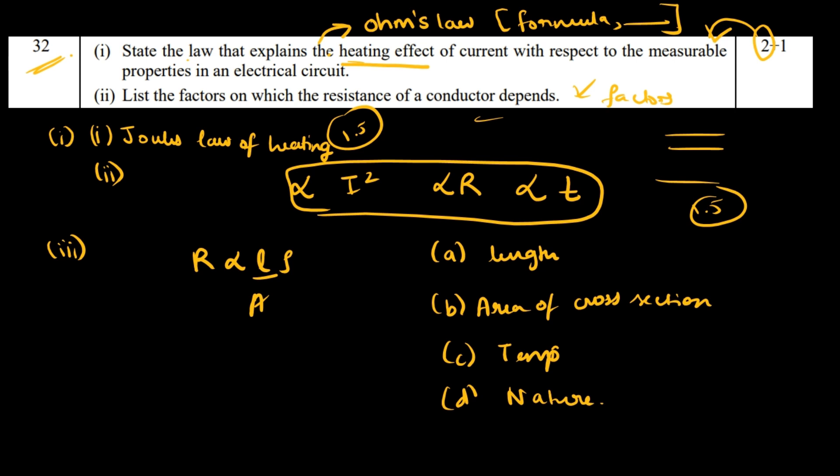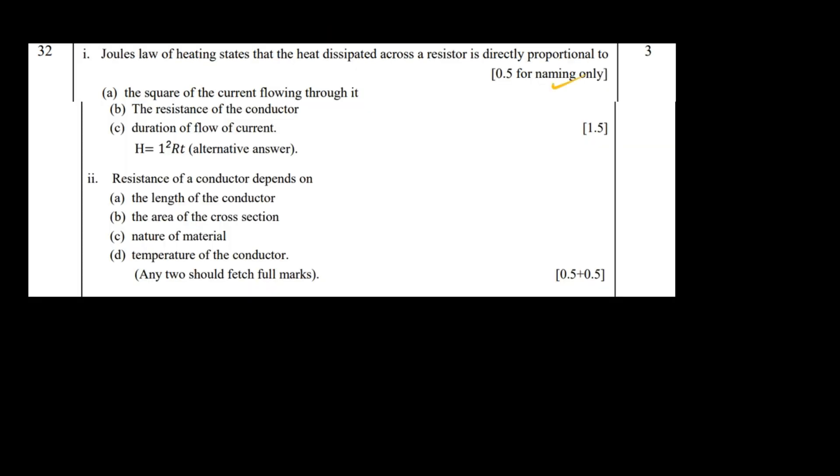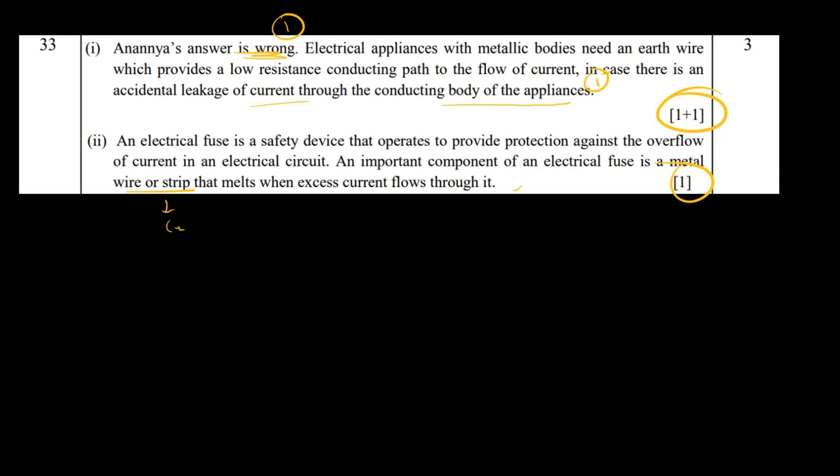This is the answer for this question, but as I told, 0.5 for naming the law alone and 1.5 for stating it. For the resistance factors, together it's one mark. They're only telling you to write two of the factors, but write however many you know. Even if it's just for one mark, write two of them fully defined in a nice statement. The other two, at least state them - like nature and temperature, write at least these two words.